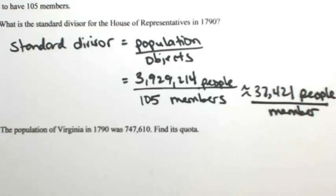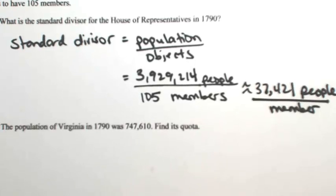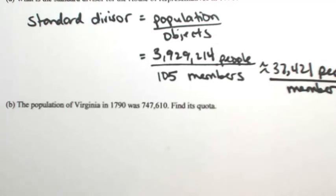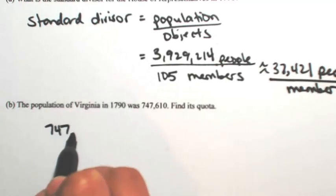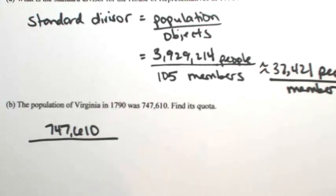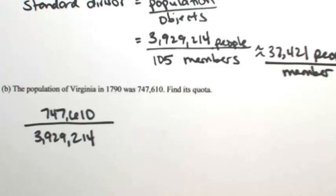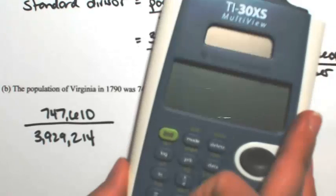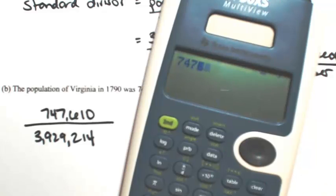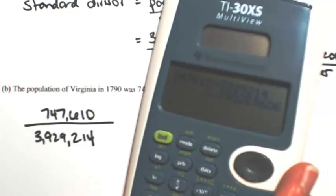Still in 1790, let's say the population of Virginia was 747,610 people. We're trying to figure out how many representatives Virginia should have. The first thing we're going to do is figure out what percentage of the population Virginia has. So we take 747,610 and divide it by the entire population, 3,929,214. This gives us the portion that Virginia's population is to the entire population — dividing these two out, we get about 0.1903.